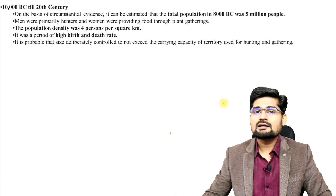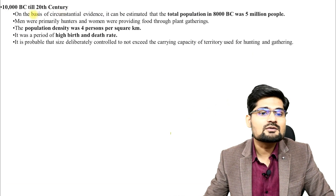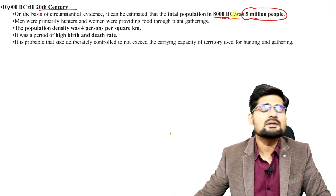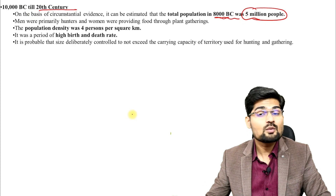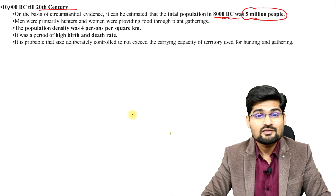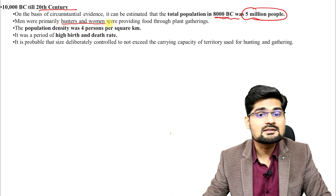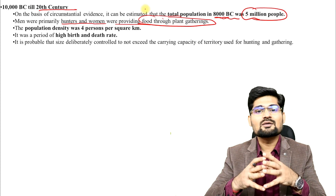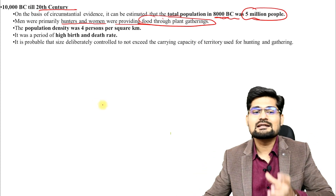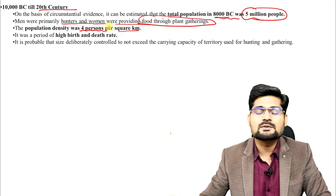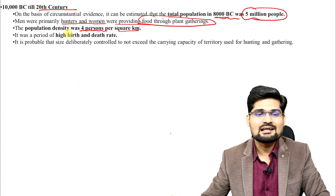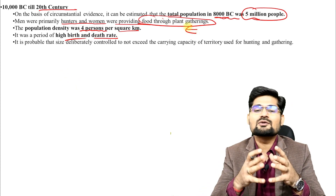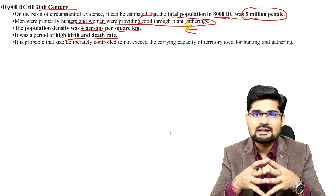Looking at history from 10,000 BC to the 20th century: during 8000 BC, the world population was estimated to be just 5 million. We are going to cross almost 10 billion by 2050. Men were primarily hunters and women were food gatherers — hunter and gathering communities transitioning to settlers and agrarian communities — where only four persons per square kilometer was the average population density, with high birth rates and death rates.